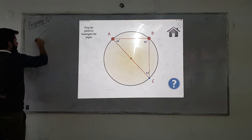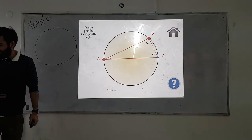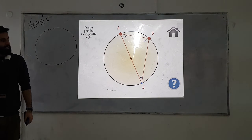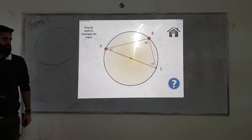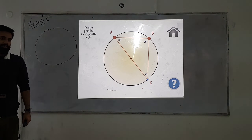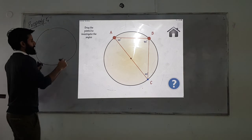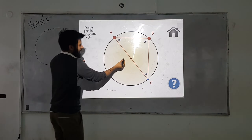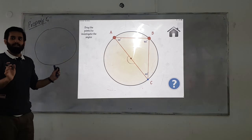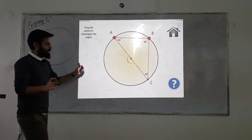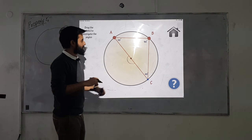All right, so here's property number five. Can you write this property down in words? If we change this line, we notice that angle B is always 90 degrees. This is basically an extension of property four — the angle at the center is a straight line, so it's always 180, and the circumference angle is half of that.